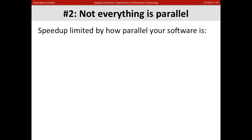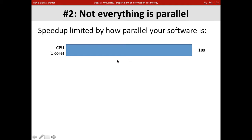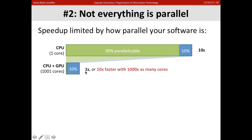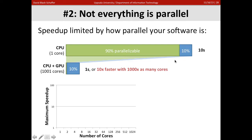The second biggest problem is that not everything is parallel. If you're running on a massively parallel GPU, you're limited by how parallel your software is. Say I have a program that takes 10 seconds on one CPU core, and 90% of it is parallelizable. With a thousand GPU cores added, I can run that 90% basically instantly — a thousand times faster — but I still have the 10% that isn't parallelizable, so I'm now taking one second total: 10 times faster with a thousand times as many cores.